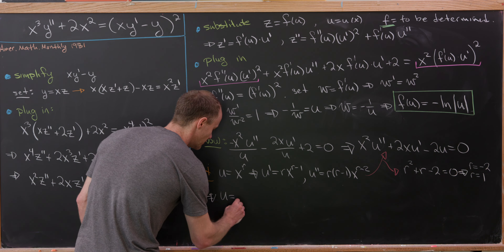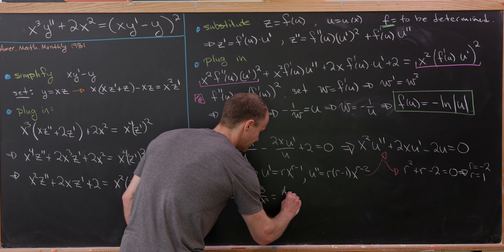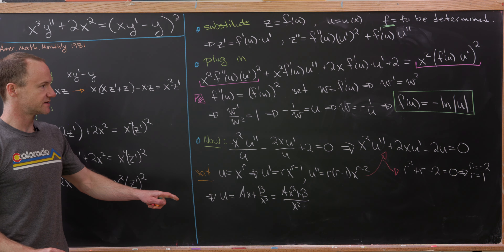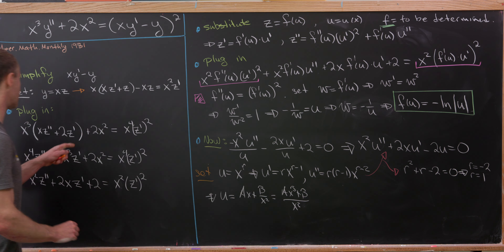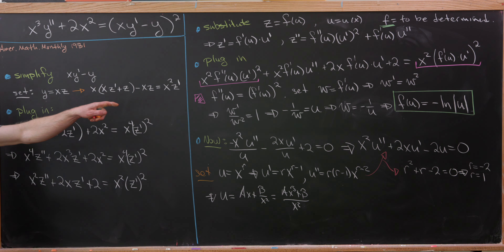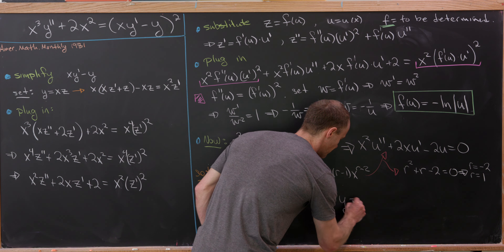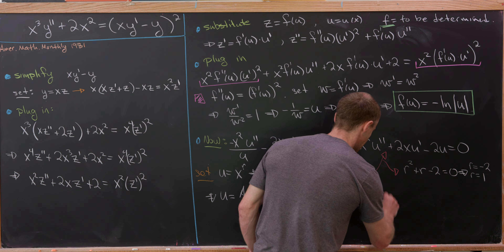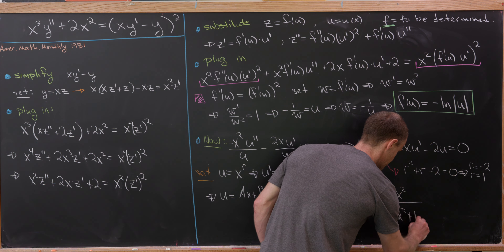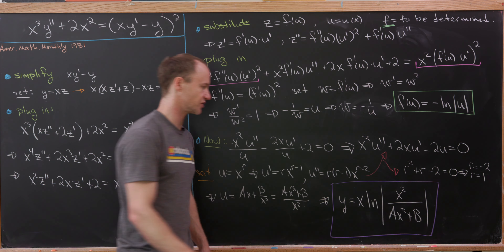We can write u = (ax³ + b)/x². Now putting everything together: y = xz = x·f(u) = x·(-ln|u|) = -x·ln|u|. Substituting u = (ax³ + b)/x² and applying logarithm rules, the final solution is y = x·ln|x²/(ax³ + b)|. That's our final solution to this nonlinear differential equation.